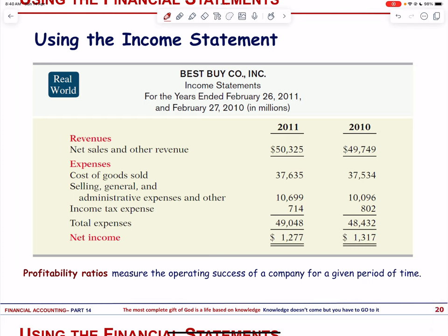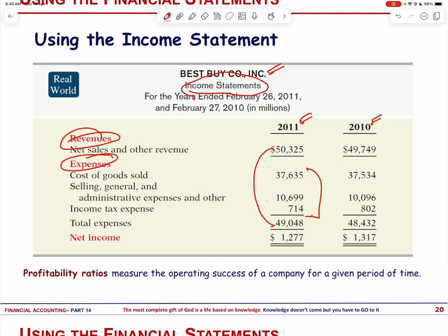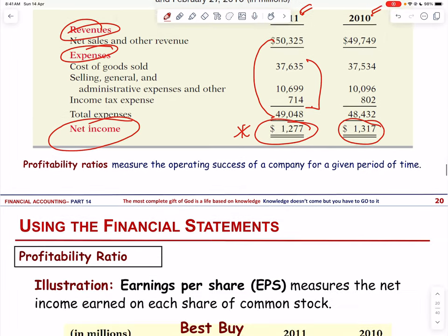For the income statement, we have Best Buy Company's revenues for 2011 and 2010. We first record revenues and then expenses; revenue minus expenses gives us net income. For Best Buy, the net income for 2010 was 1,317 and for 2011 it was 1,277, so net income decreased in 2011.